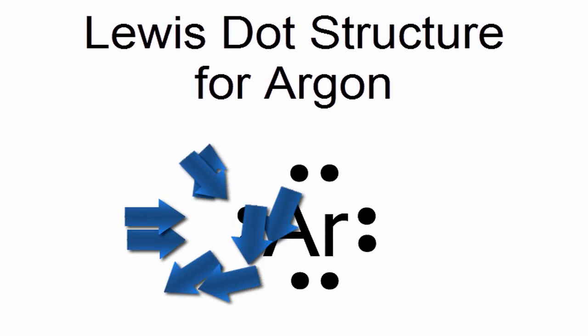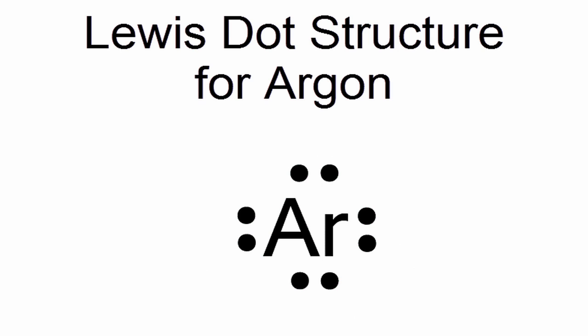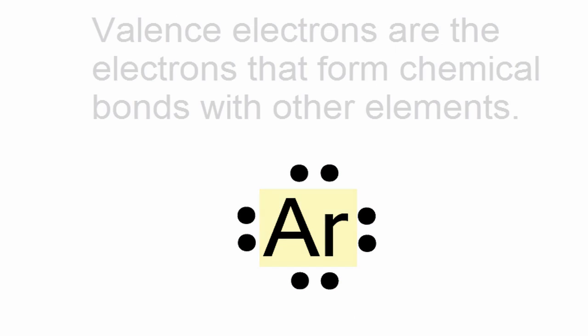Argon is in group 18 or 8A. That means it has eight valence electrons. We'll put those eight valence electrons around the element symbol, Ar, for argon.